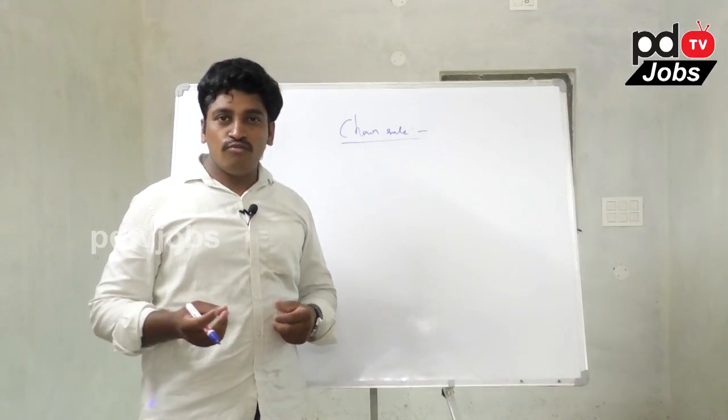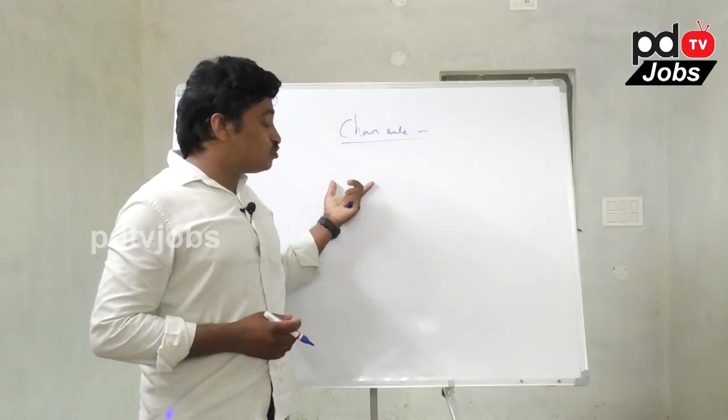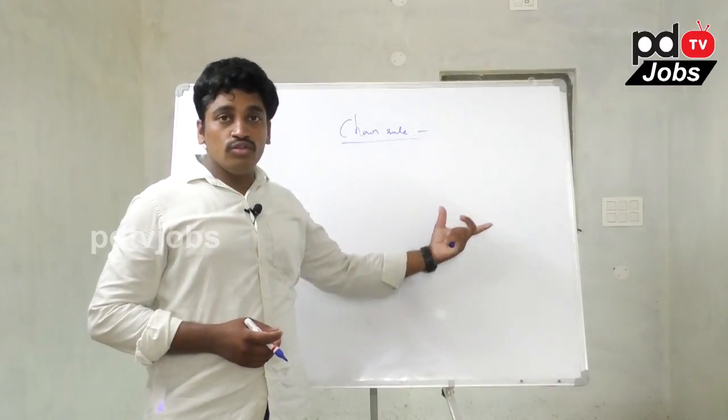For example: three men, four women can do a piece of work in so many days. Two men, three women — these are typical time and work problems where we apply the chain rule.